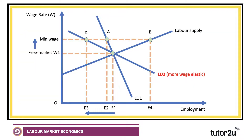LD2 here is a more elastic demand curve, and for the same increase in the minimum wage, instead of employment falling from E1 to E2, the number of people in work falls from E1 to E3 — you move up the demand curve to point D. This suggests that the employment effect of a minimum wage could be more sizable. Perhaps employers are substituting labour for capital — security guards replaced by self-scanning machines in supermarkets, for example.